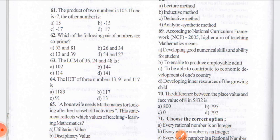Coming to question number 62: which of the following pair of numbers are coprime numbers? The four options given are 52 and 81, 13 and 39, 26 and 34, and 54 and 27. Coprime numbers are two numbers having only one as a common factor. Example: 4 and 15 are coprime numbers.